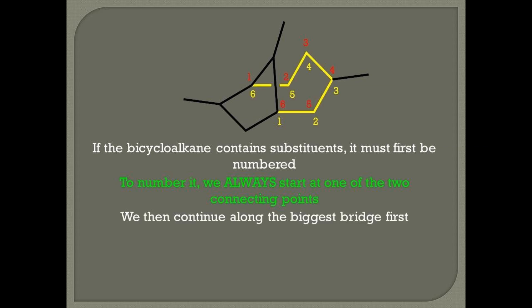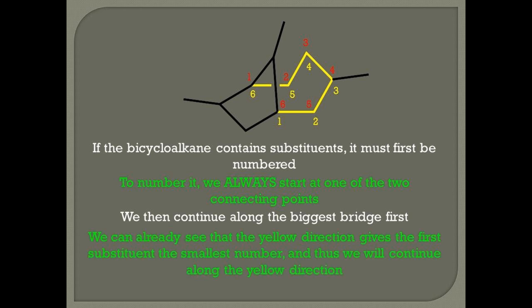And after we get the connecting points, we continue along the biggest bridge first. We can already see that there are two ways to number this molecule, along the yellow direction and the red direction. However, we can see that the yellow direction gives the first substituent the smallest number.